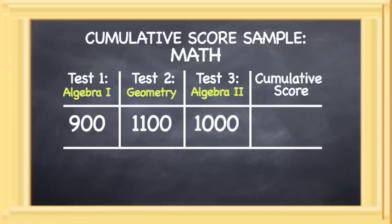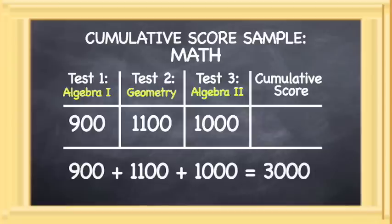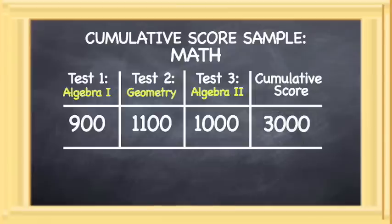In Algebra 2, he scores 1000, which is also above the minimum level. When added together, the three math EOC exam scores equal 3000, which meets the Cumulative Score requirement in our example.